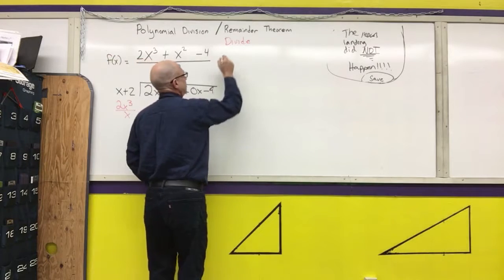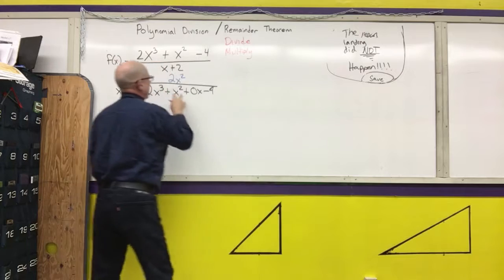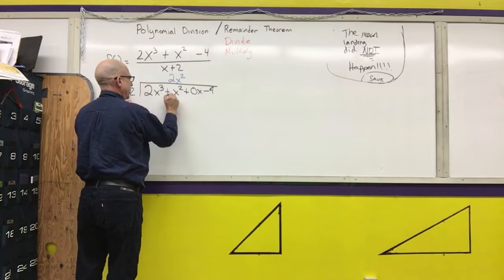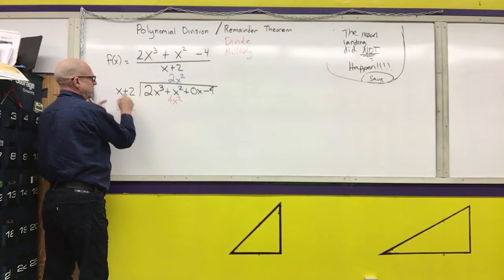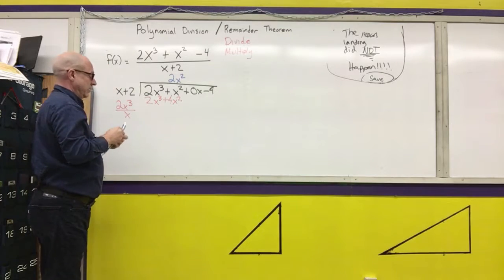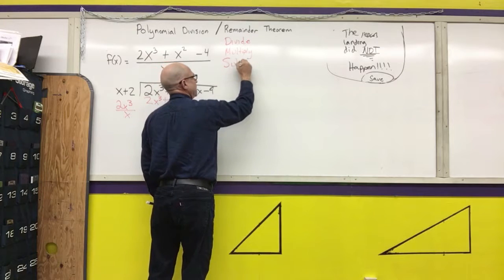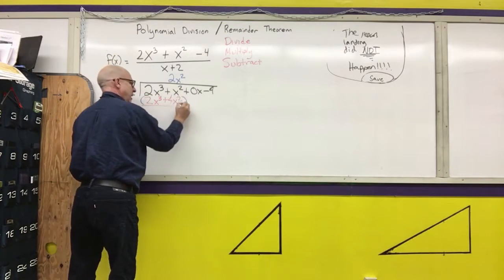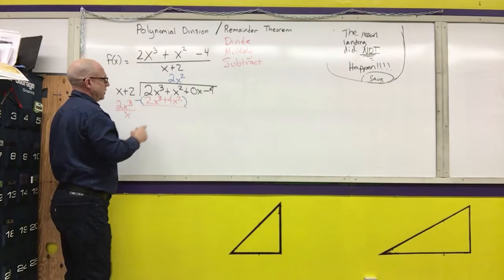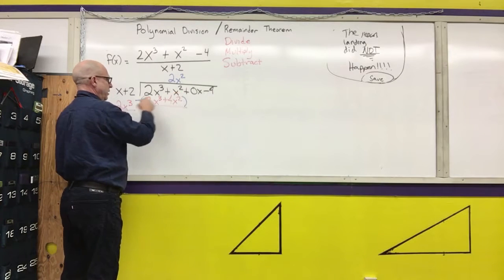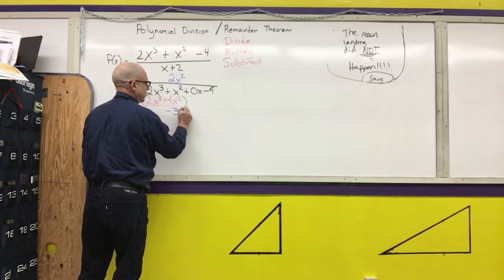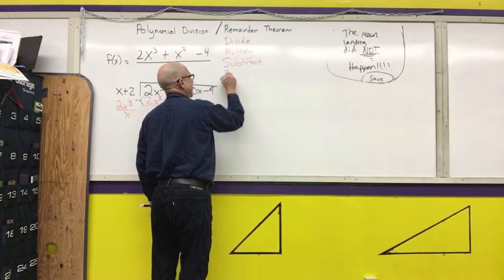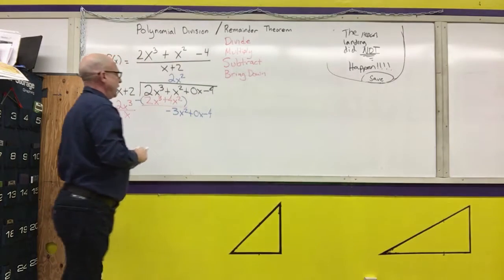The second step is to multiply. I'm going to multiply 2x squared times what I'm dividing by. 2x squared times 2 is 4x squared, and 2x squared times x is 2x cubed. The third step is to subtract. When you're subtracting, you're subtracting each of the terms — I always put parentheses around it with a subtraction sign so I don't mess it up. 2x cubed minus 2x cubed is 0. x squared minus 4x squared is negative 3x squared. Then I'm going to bring down the other terms — that is our last step: bring down.